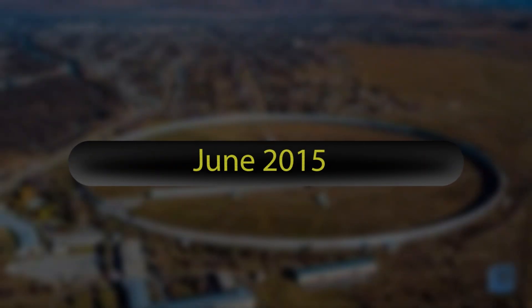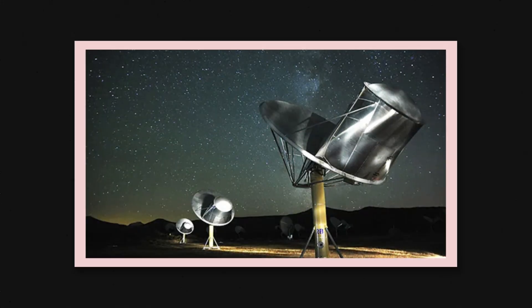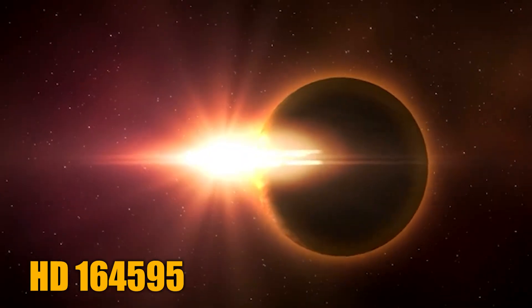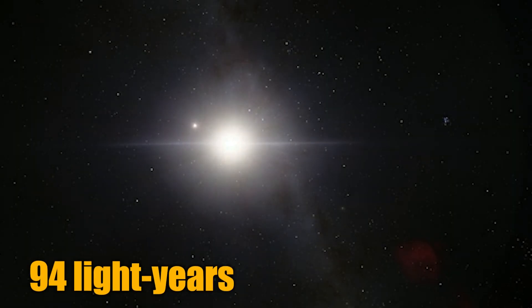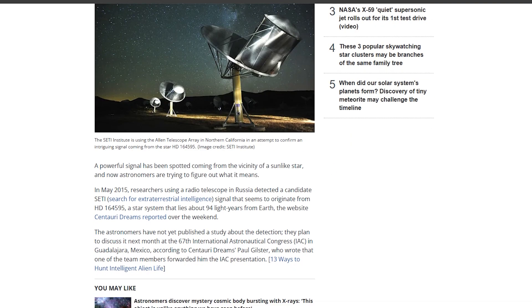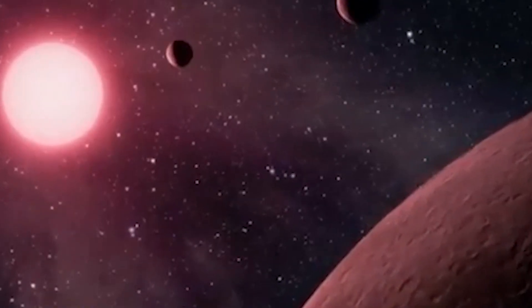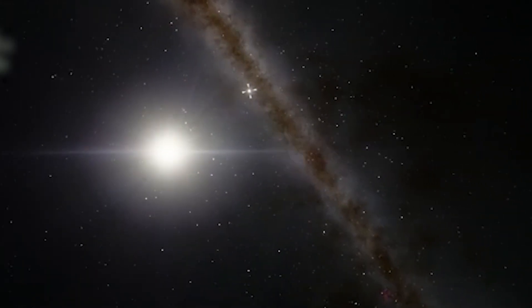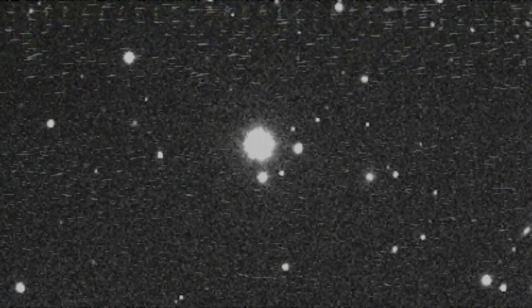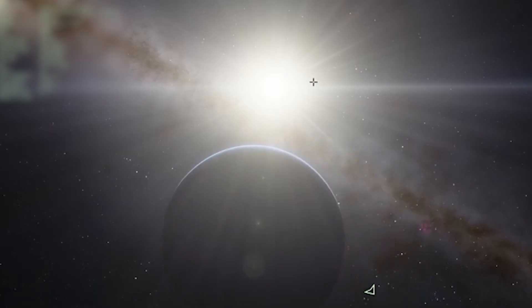In June 2015, the Russian RATAN-600 radio telescope picked up a strong, focused signal from a star system called HD 164595, which is about 94 light-years away. It was a clear spike in radio intensity around 11 gigahertz. There were no flares, no debris, and nothing natural that could explain it. The star is nearly identical to our sun. It even hosts at least one known planet. For a brief moment, astronomers considered the unthinkable. Was this a beacon? SETI never confirmed it, but they never fully ruled it out either. Some signals simply defy closure.